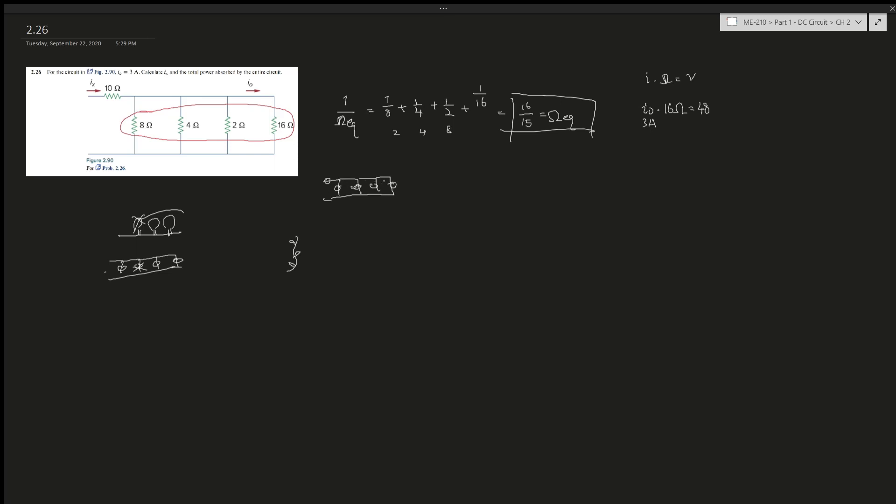Now we know that by now. This is 48 volts, so this is also 48 volts right here. We can simplify this—this is 16 over 15, and this is 10 ohms.